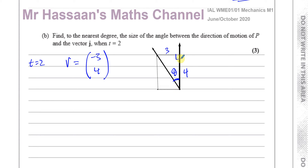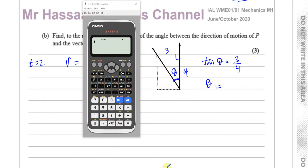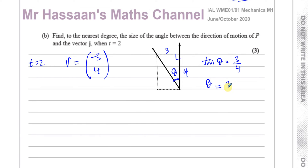We can see this is a right-angle triangle with sides 3 and 4. We can use tangent: tan(θ) = 3 divided by 4. So theta equals inverse tan of 3 over 4. Taking the calculator, inverse tan of 3 divided by 4 gives 36.8698..., and to the nearest degree, theta equals 37 degrees.